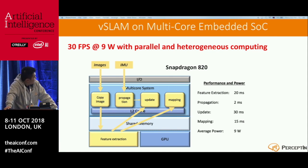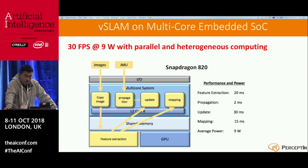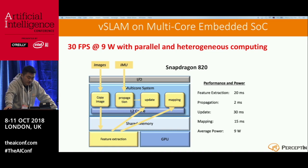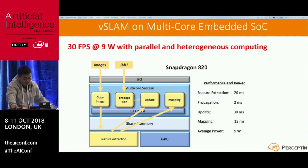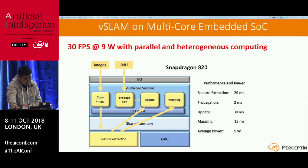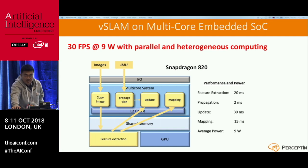Then we tried something new: instead of just parallel programming, let's use heterogeneous computing. Instead of doing feature extraction on one CPU core, why not offload that to a DSP? We did exactly that — and the performance went up to 30 frames per second instead of 20, burning one more watt due to data copying. These are all real measured results, not simulation.